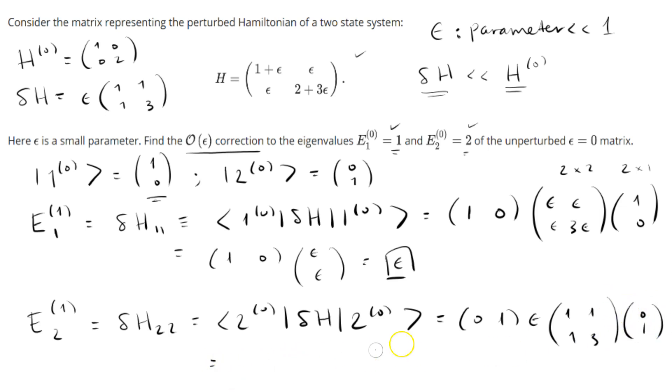Multiplying this out, we get epsilon times (0, 1) times (1; 3), which gives us 1 times 1 plus 1 times 3. When we multiply this out, we get 3 epsilon. That's pretty interesting—the second energy correction is 3 times greater than the first energy correction.